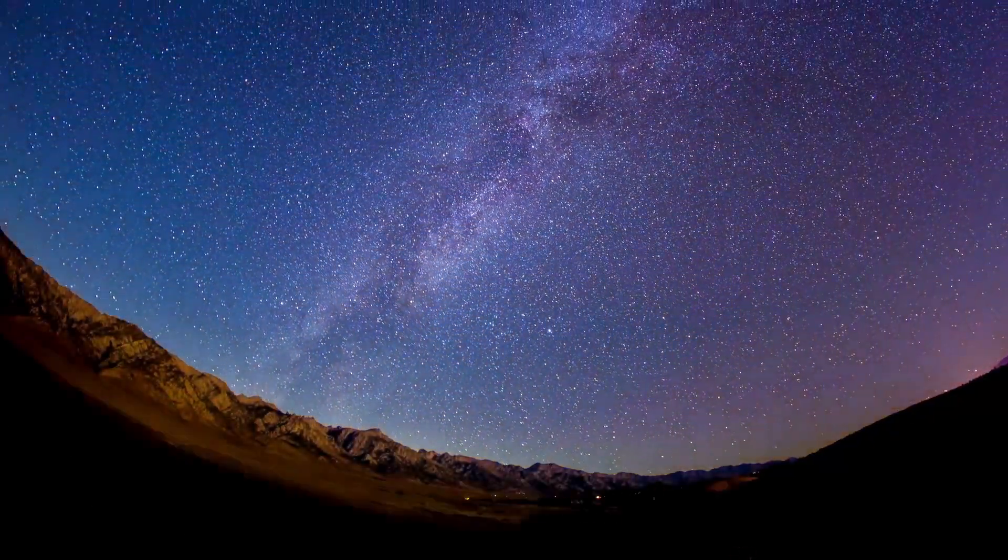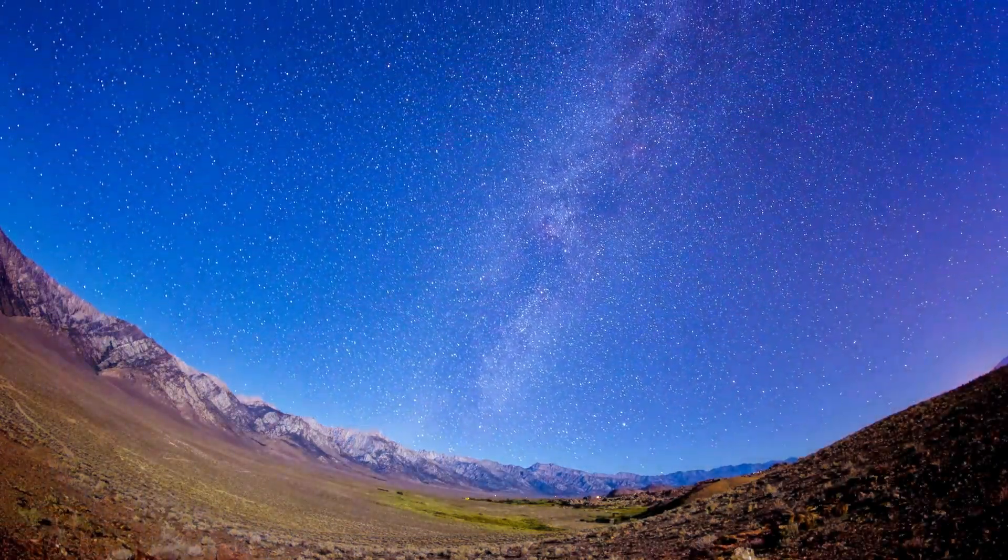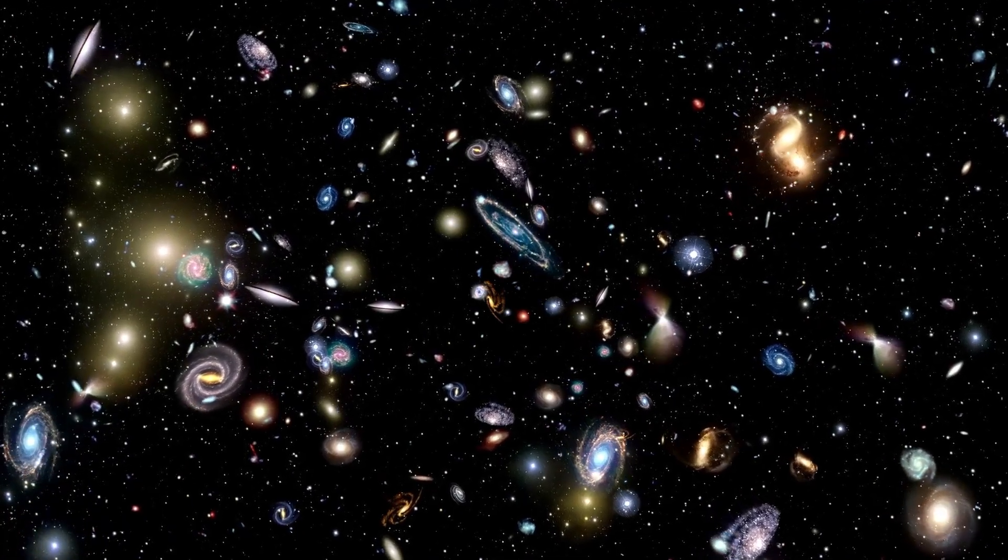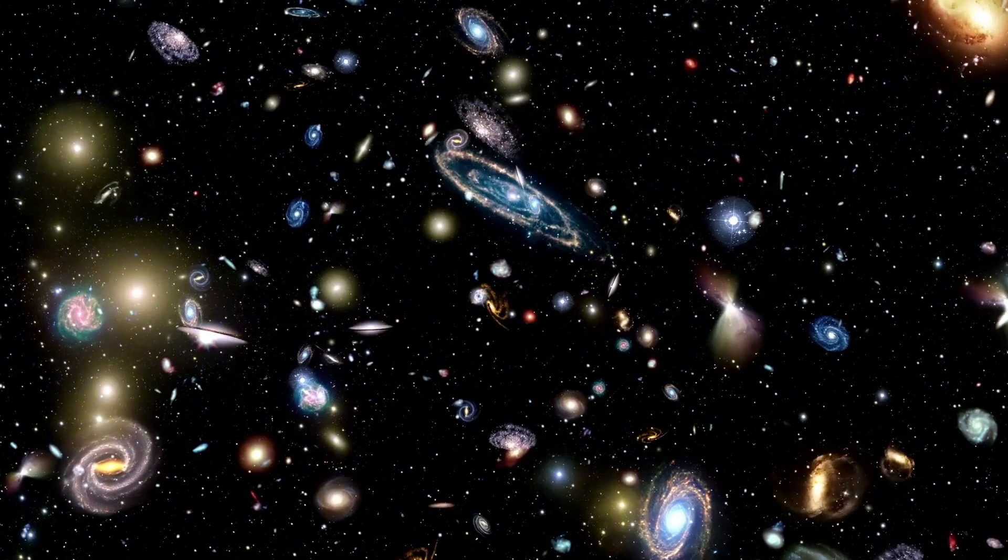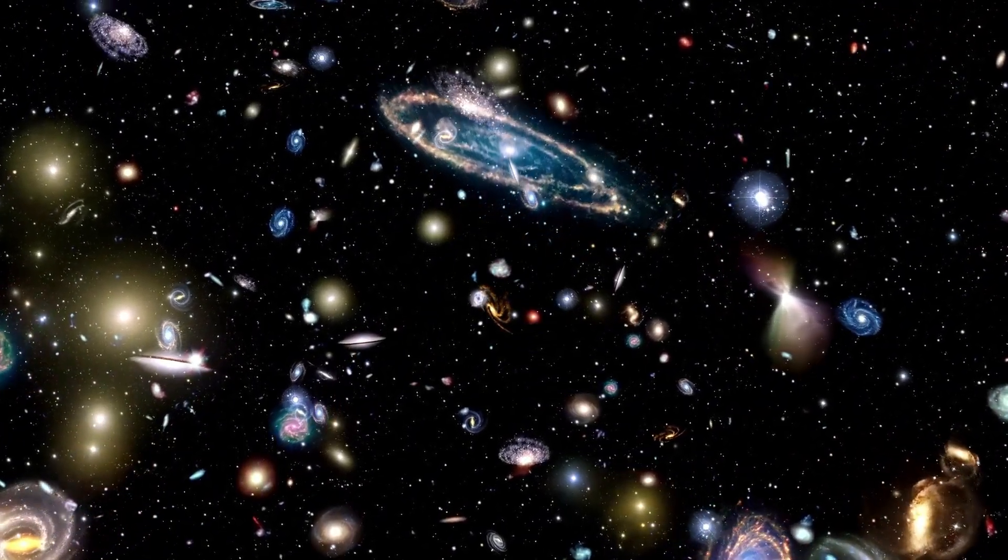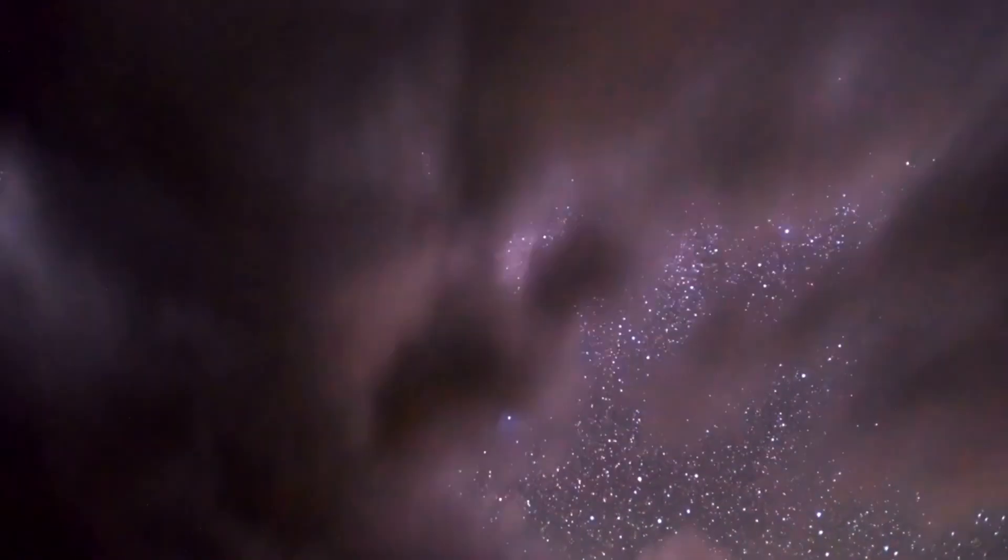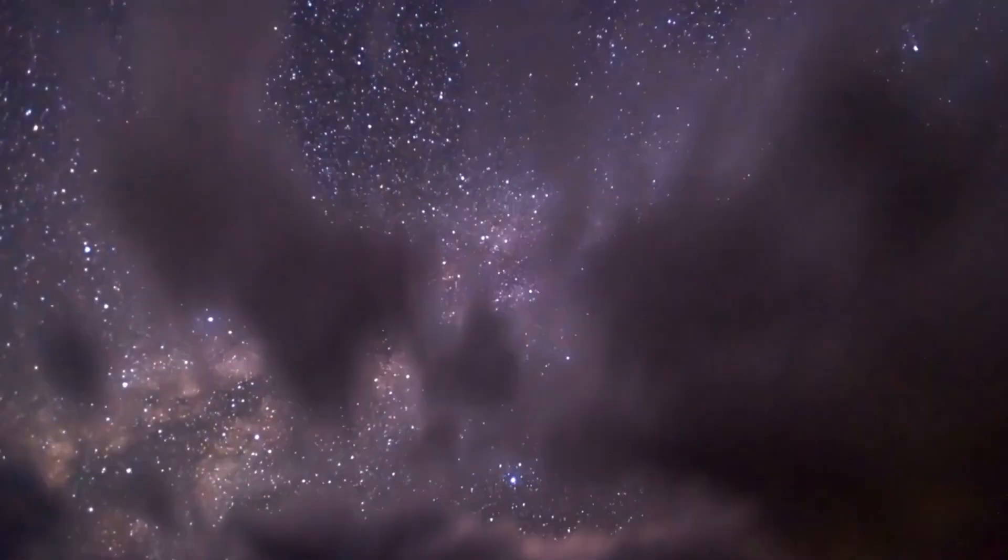But what drives a massive star like Betelgeuse to its demise? Born from the gravitational collapse of gas within molecular clouds, stars like Betelgeuse kickstart their journey by burning hydrogen in their cores. This initial phase, known as the main sequence stage, lasts for millions of years and forms the backbone of a star's life. But as stars run low on hydrogen, they evolve, embracing new energy sources. In the case of Betelgeuse, as the hydrogen depletes, it begins to burn helium, leading to the formation of carbon and oxygen.